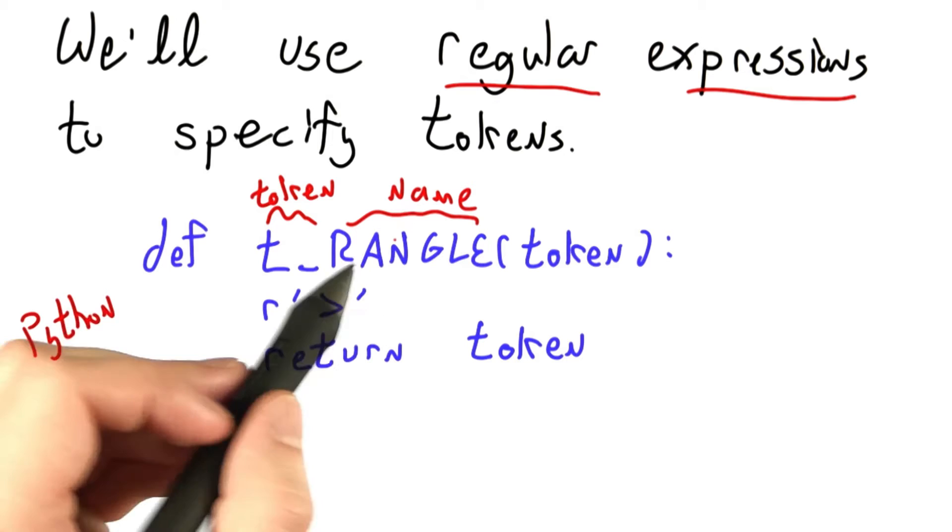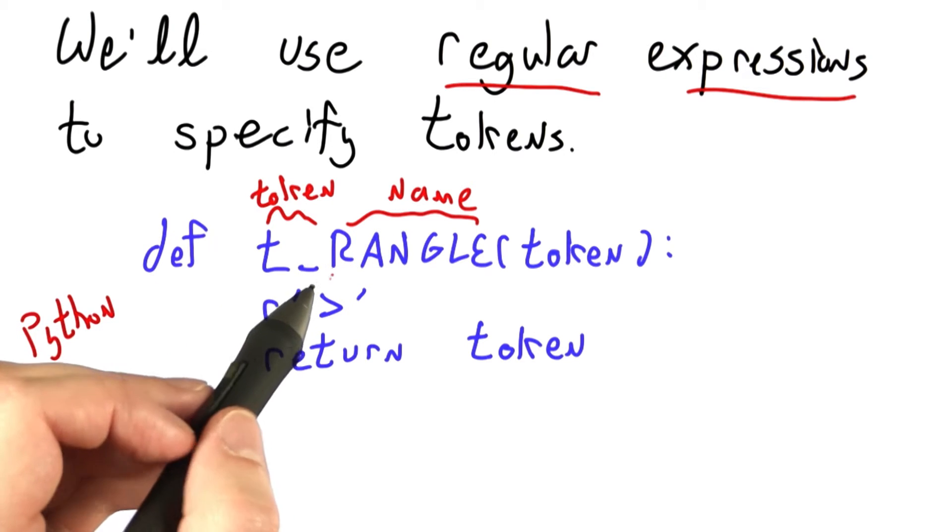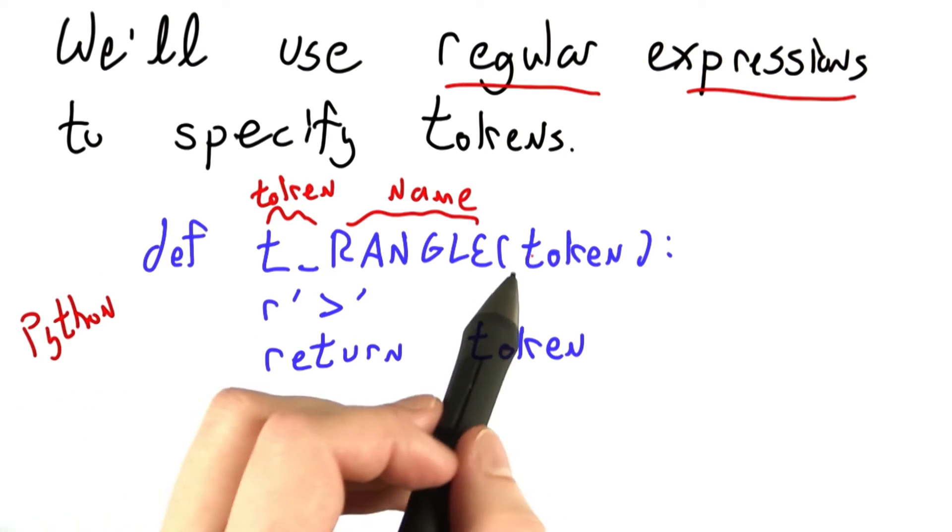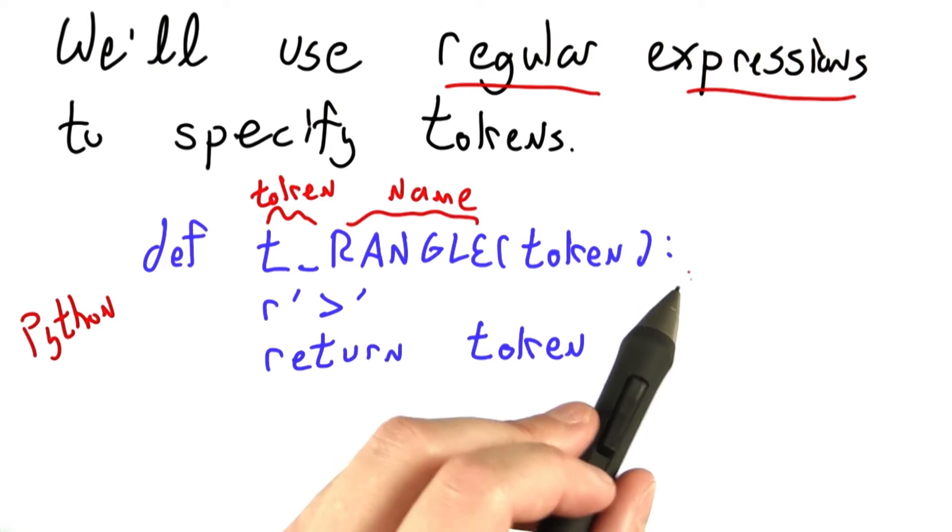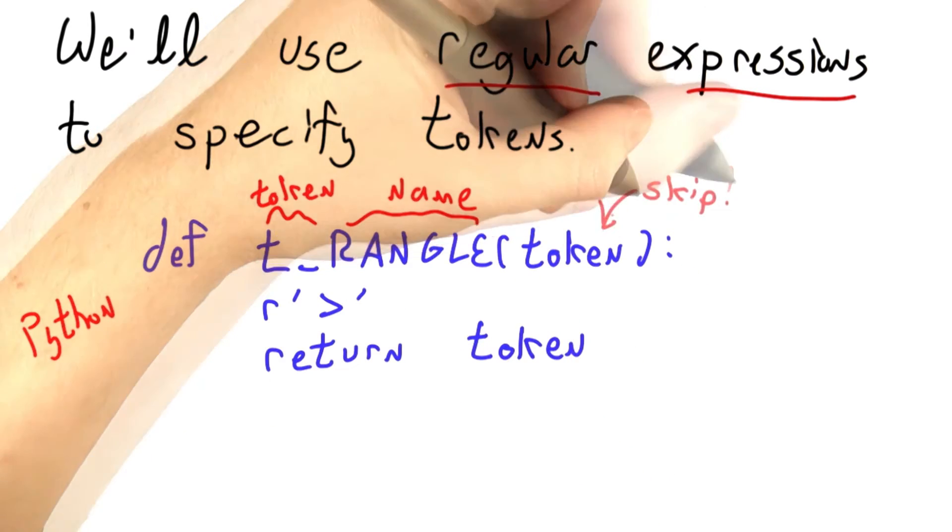You either get to make this up yourself, or in a homework, I'll tell you what I want it to be. Tokens are in some sense going to be functions of the text they match. More on this a bit later. Skip me for now.